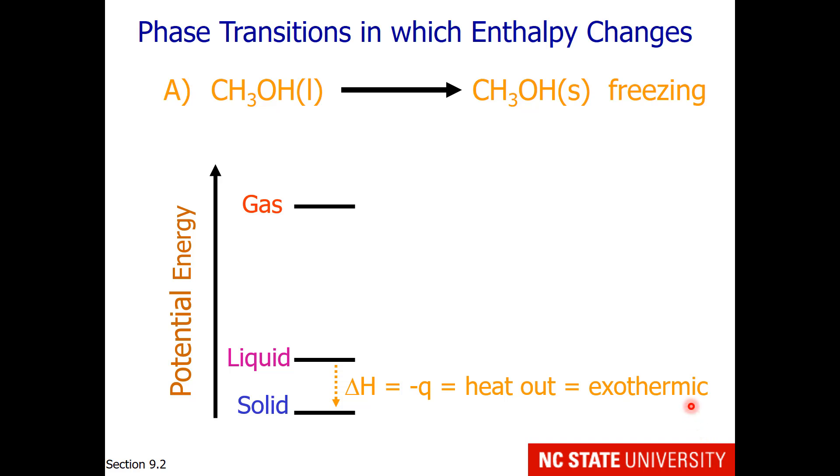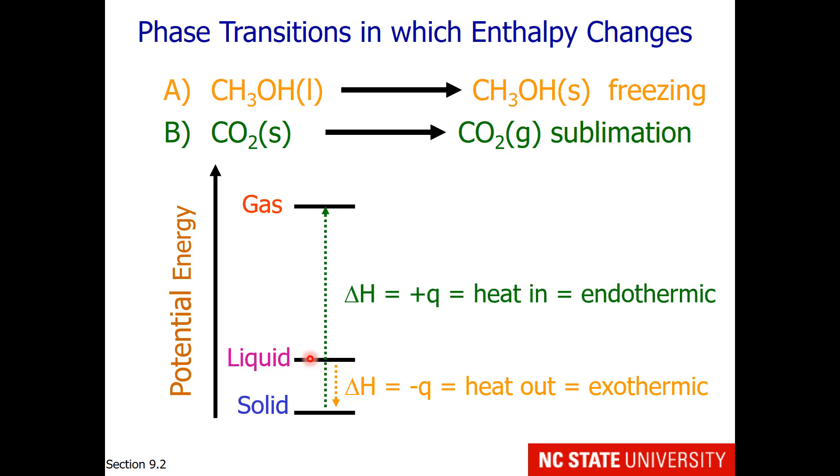If we think about carbon dioxide in a solid state, going to carbon dioxide in the gas state, which is sublimation, when we draw that arrow on our diagram, that is upward. That tells us the enthalpy change is positive in value, heat is going into the system for this phase transformation, and we call that an endothermic reaction.